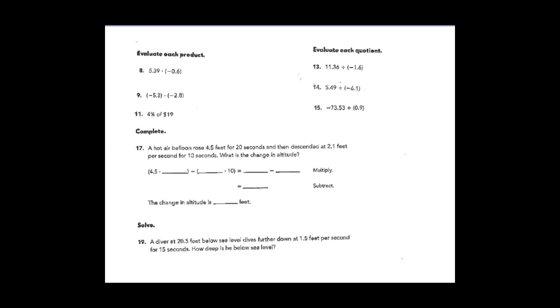At the top of page 18 you can see some products and some quotients. I'm not going to do all of these — we'll get to practice a bunch in class tomorrow — but I am going to do a couple of them. I'm going to do number nine: negative five and three tenths times negative two and eight tenths. A negative times a negative rational number will give me a positive answer. I know that.